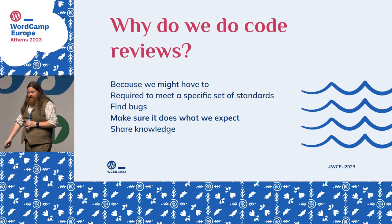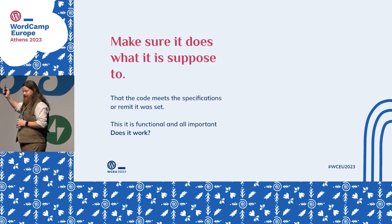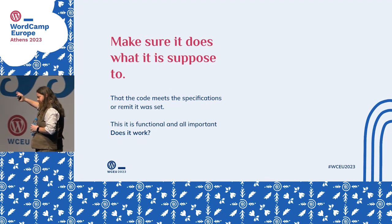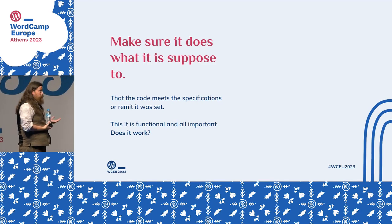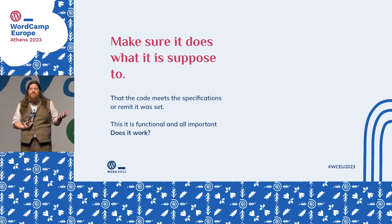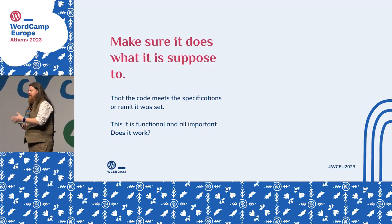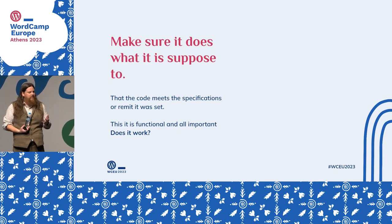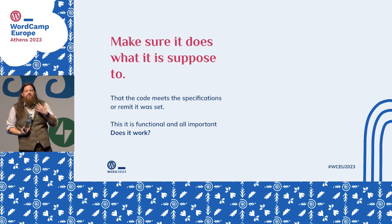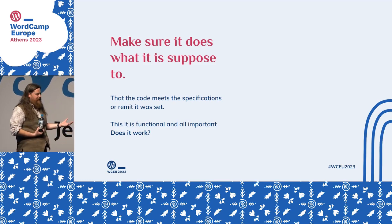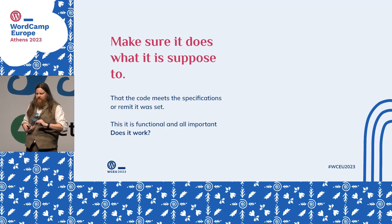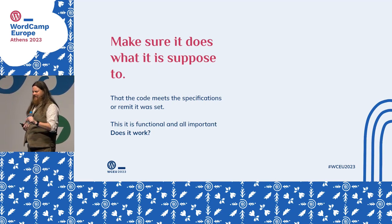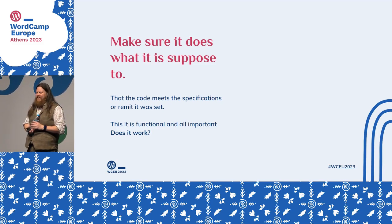We also need to make sure code does what we expect — does it actually work? I've put that separate from bug fixes. Does it do the thing we actually asked for? I imagine many of you have been given code to review, looked through it, and it looked beautiful — a thing of beauty, everything lovely. And then in the last second, before you went to push it, you ran it locally and it doesn't actually work. Then you look at it again and go: oh, ChatGPT. Okay.